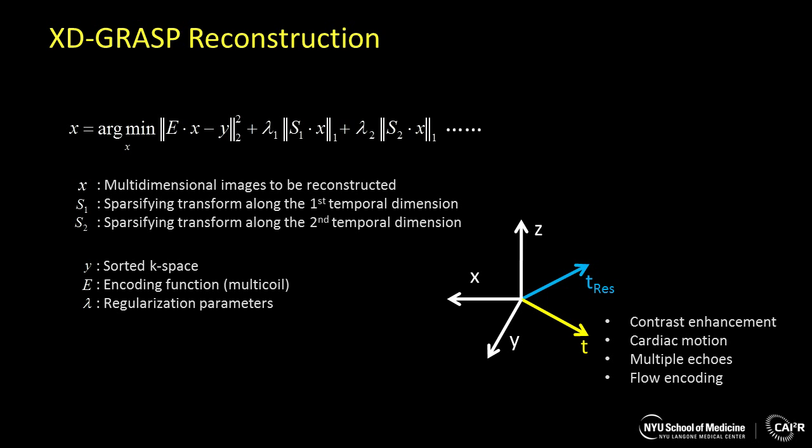This constraint can be combined with the constraint along the original dynamic dimension. This dimension can include contrast enhancement, cardiac motion, or even multiple echoes or flow encodings.